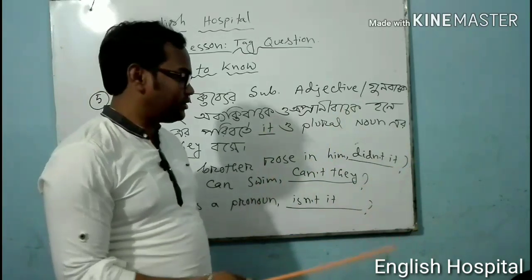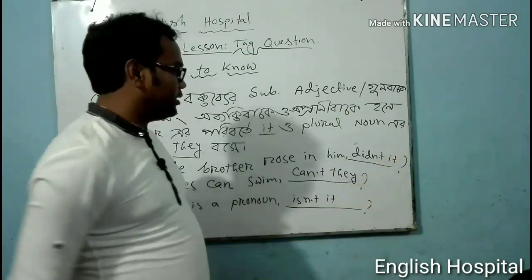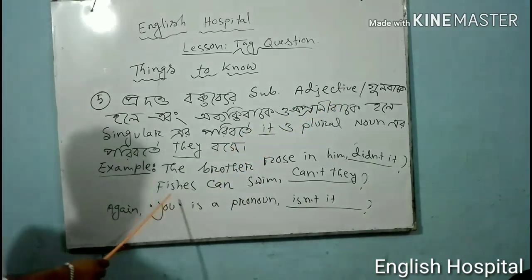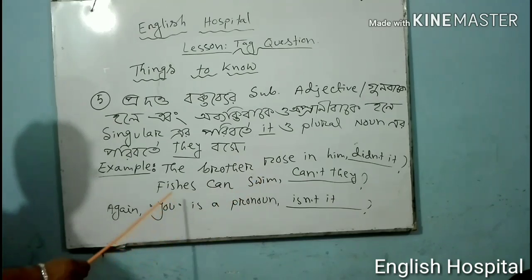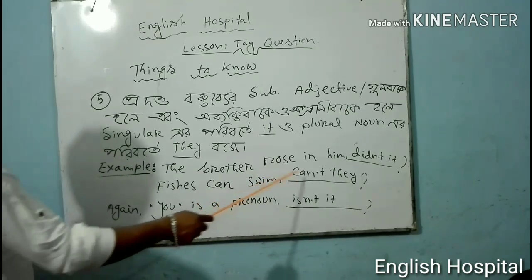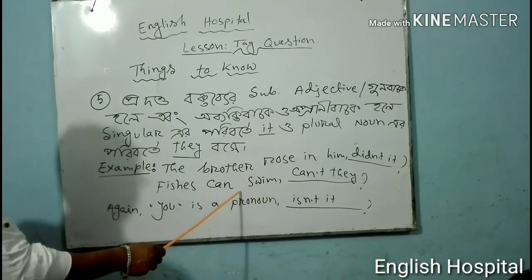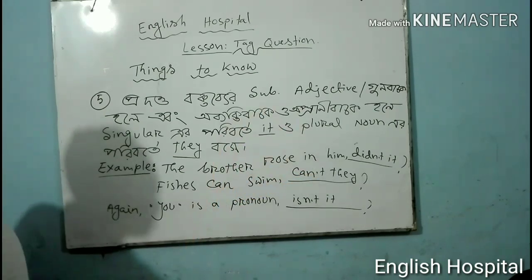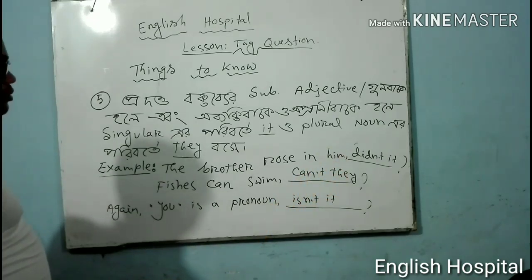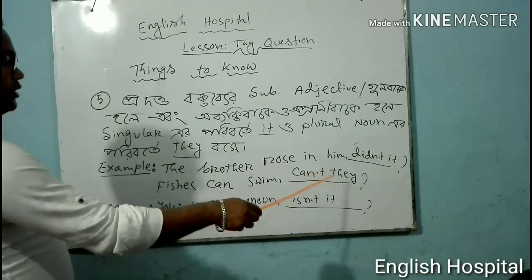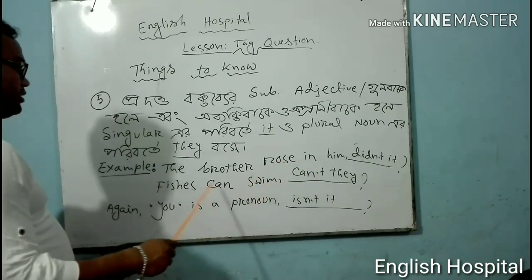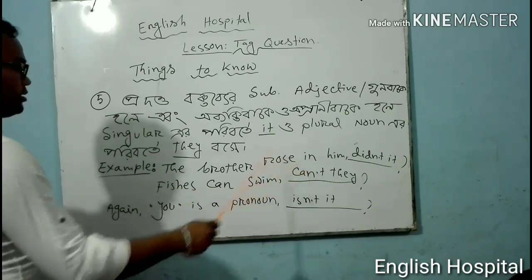For example, 'Fishes can swim.' The subject 'fishes' is plural. The auxiliary verb is 'can.' Since the statement is affirmative, the tag question is negative: 'can't they?' — because 'fishes' is plural.